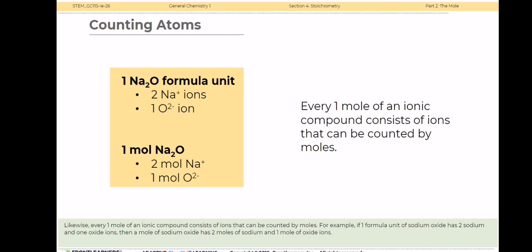Likewise, every one mole of an ionic compound consists of ions that can be counted by moles. For example, if one formula unit of sodium oxide has two sodium and one oxide ions, then a mole of sodium oxide has two moles of sodium and one mole of oxide ions.